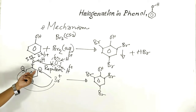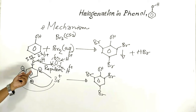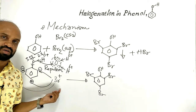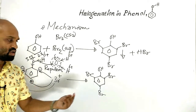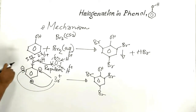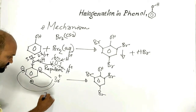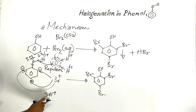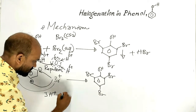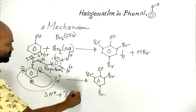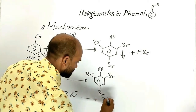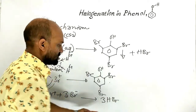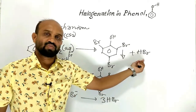Because of the higher electron density, phenol becomes more reactive towards electrophiles. That is why 2,4,6-tribromophenol is formed. From the ortho and para positions, three hydrogen atoms go out as protons. These protons combine with bromide ions, which are produced from the bromine molecule, to form 3 molecules of hydrogen bromide — which is the by-product in the reaction.